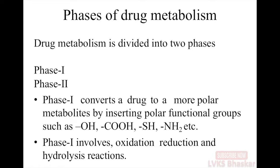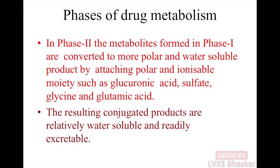Phase 1 converts a drug to more polar metabolites by inserting polar functional groups such as hydroxyl group, carboxyl group, sulfhydryl group, and amino group. Phase 1 involves oxidation, reduction, and hydrolysis reactions.